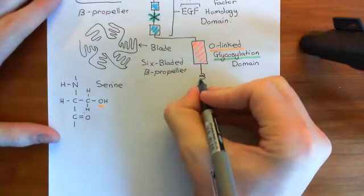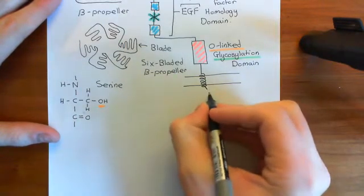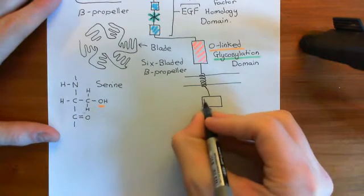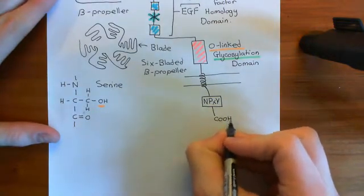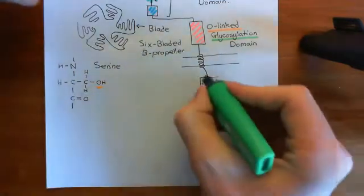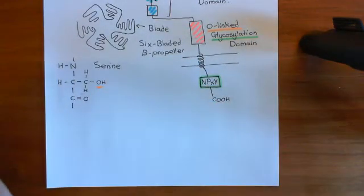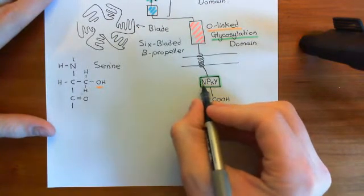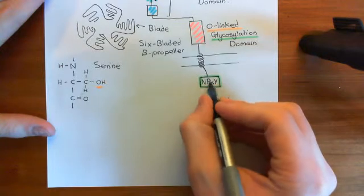After the O-linked glycosylation domain, there is the single membrane-spanning alpha helix crossing the phospholipid bilayer, and then a small cytoplasmic tail. The important domain within the cytoplasmic tail is called an NPXY domain, and the receptor ends with the carboxylic acid terminus. This NPXY domain is crucial to the endocytosis of the receptor once LDL has bound to the LDL-receptor type A repeat domain.